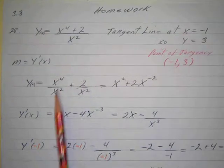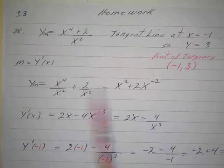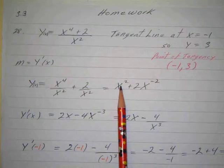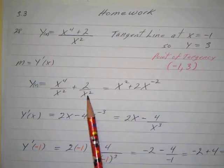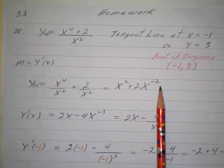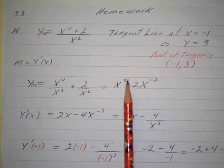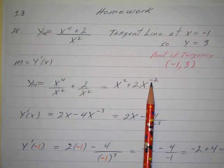I can write this as x to the fourth over x squared plus 2 over x squared, and x to the fourth over x squared is just x squared. And then I have 2 over x squared, which is just x to the minus 2, and I can use the power rule on both of these. This is a positive integer and a negative integer, that's fine.